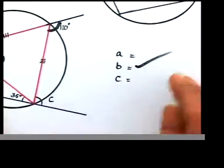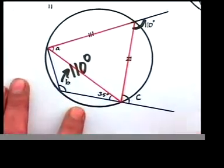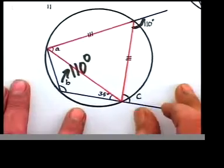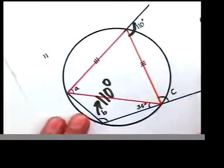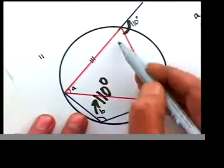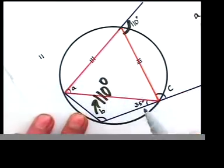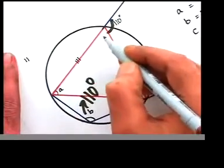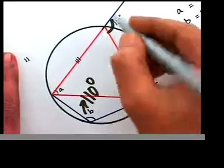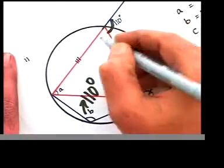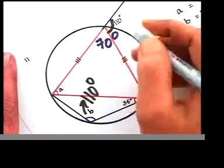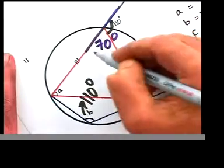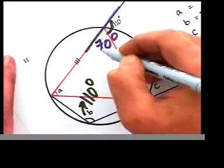We got one value — B is known to us. Now, can we find C? We can't find C at the moment, let's wait. For the isosceles triangle, nothing is given for the inside angles. But wait — is there a way to find this angle? The outside angle is 110, so the inside angle should be 70. That's a straight line, so together it should be 180: outside 110, therefore inside is 70.